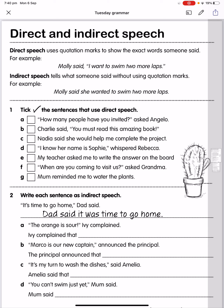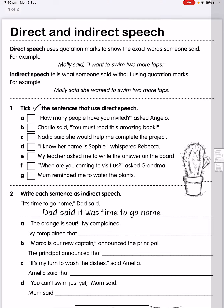It's retelling what Molly said without Molly actually saying it. Just want to draw your attention: in the direct speech example, 'Molly said' is coming before the sentence, so the comma is still in between the unspoken and spoken word. If the sentence came first — 'I want to swim two more laps, Molly said' — the comma would be after the word 'laps'.